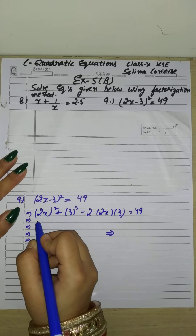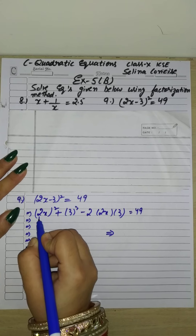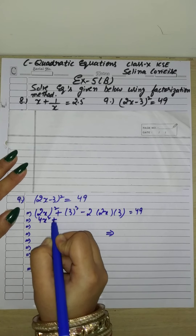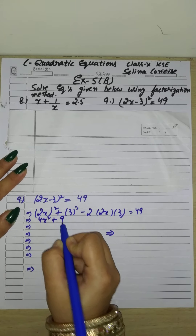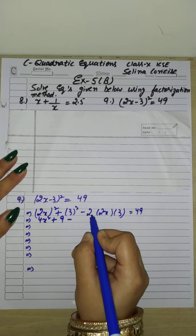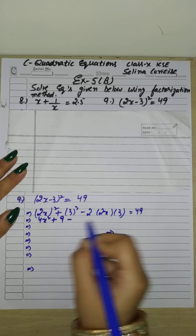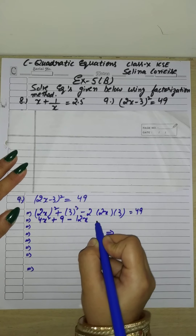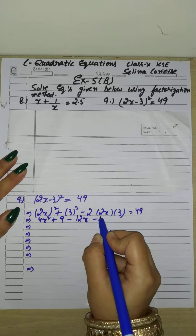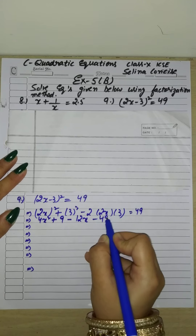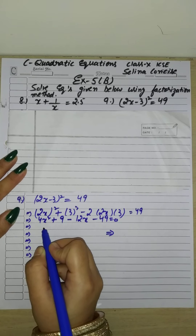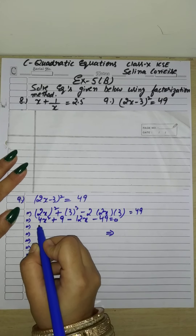When we open the square, what will come here? We get 4x² + 9 − 12x. Then, moving 49 to the left side, this becomes minus 49 equal to 0. Now we have to write it in standard form.